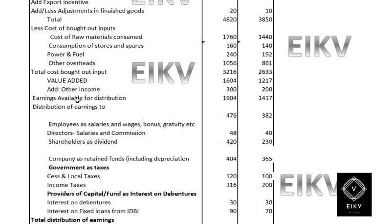For the distribution of earnings, first we take the total employee cost. This includes direct wages of 476 and 382, then salaries, directors' salaries and commission — also included as employee salary — which is 48 and 40, and other salary components totaling 403.